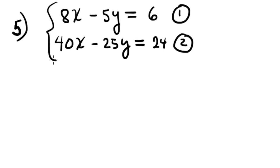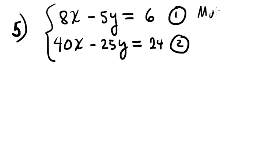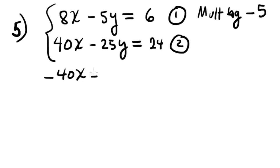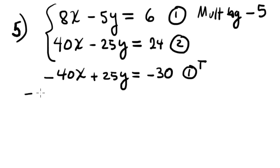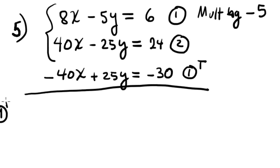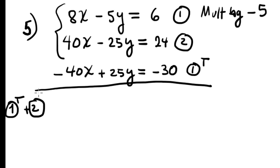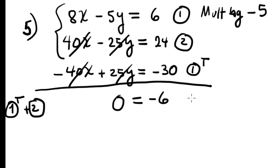Multiplying equation 1 by negative 5 gives negative 40x plus 25y equals negative 30, equation 1 transformed. Adding equation 1 transformed plus equation 2: the 40x and 25y terms all cancel out, leaving zero on the left-hand side and negative 6 on the right. This statement is completely false.